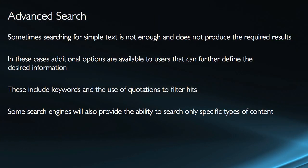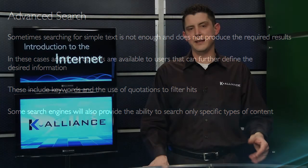In these cases, you do have additional options available to you that can further define your search. They include keywords like AND, OR, and NOT; special symbols like the minus sign; and the use of quotations to filter hits to exact phrases. Some search engines will also provide the ability to search only specific types of content, like audio, video, or images.